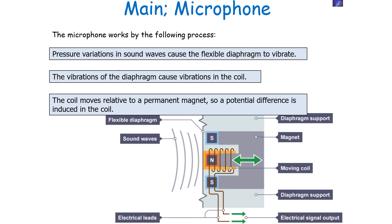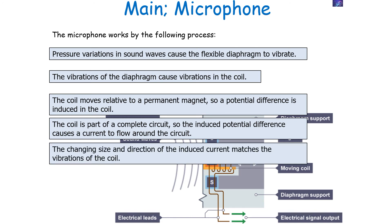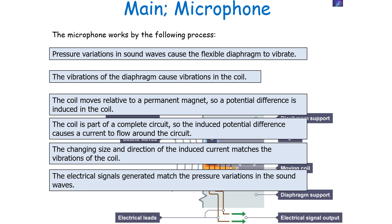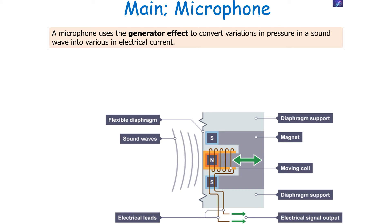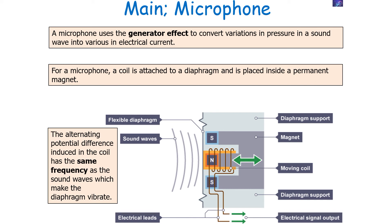Because the coil is part of a complete circuit, the induced potential difference causes a current to flow. The change in size and direction of the current matches the vibrations of the coil — a bigger sound wave produces a larger current, and if the coil moves in the opposite direction, the current flows in the opposite direction. So the electrical signals generated in the circuit match the pressure variations in the sound wave. For a microphone, the alternating potential difference induced in the coil has the same frequency as the sound wave which makes the diaphragm vibrate.